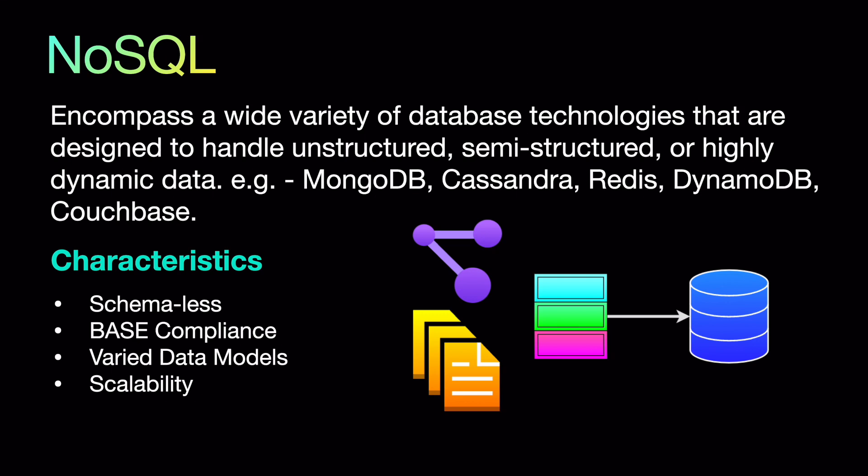NoSQL databases follow certain characteristics. First, they are schema-less, meaning they have flexible schemas that can handle a variety of data formats — you don't need to stick to a rigid schema. They are BASE compliant, meaning basically available, soft state, and eventually consistent. They support many data models including document, key-value, column-family, graph, and time series databases. One of the primary reasons NoSQL became famous is that it is designed for horizontal scalability across distributed architectures.